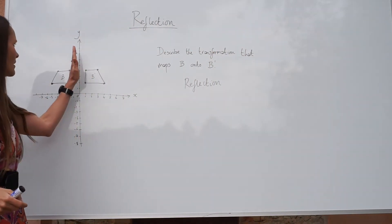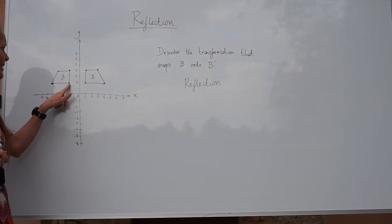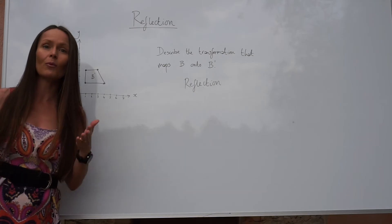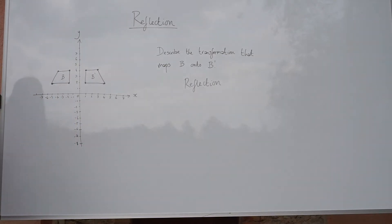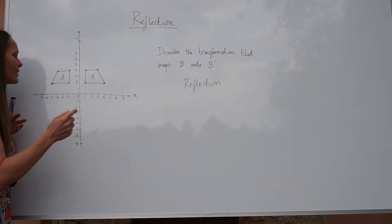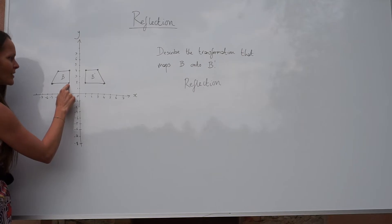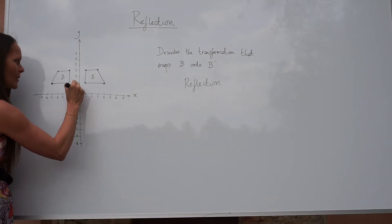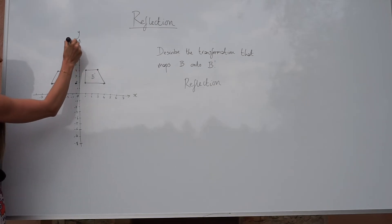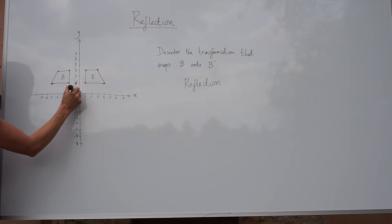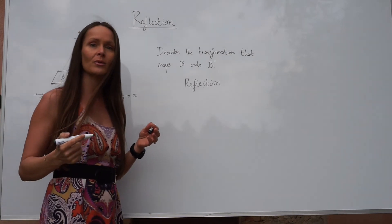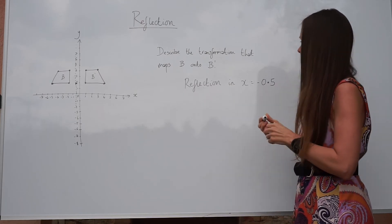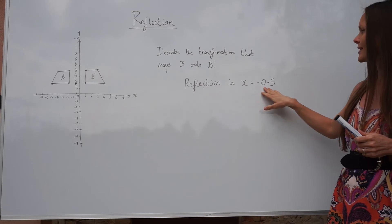So it's going to be here somewhere, but we need to find it precisely. Between these two points there are exactly three units between them. If we halve three we get 1.5, so you need to count 1.5 units from here to find the mirror line. This point is at minus two, so if I add 1.5 it takes me to negative 0.5. The mirror line is there, and the equation of the mirror line is x equals negative 0.5. So the final answer is: it's a reflection in x equals negative 0.5.